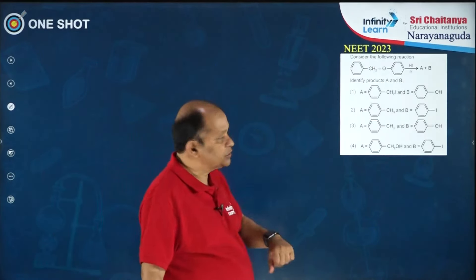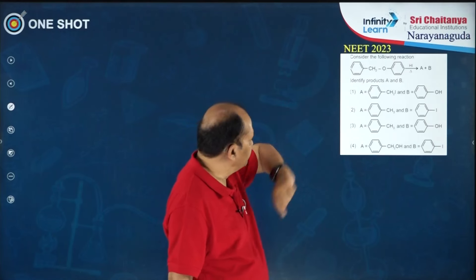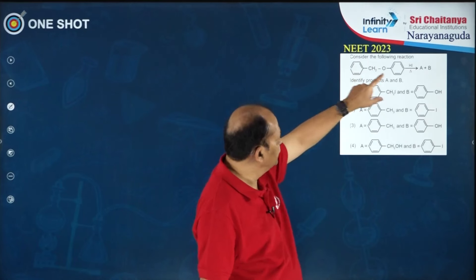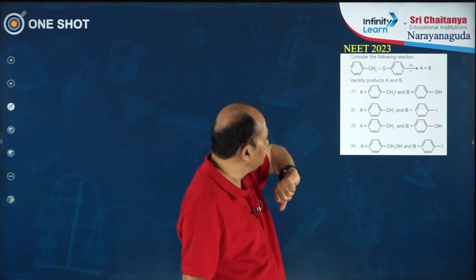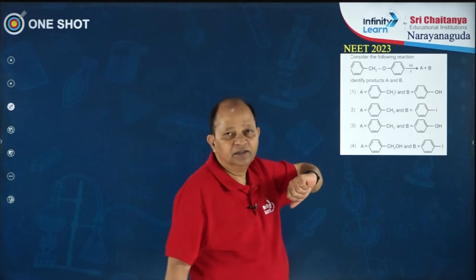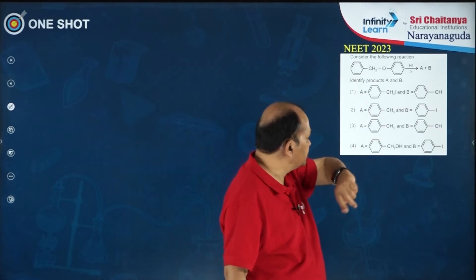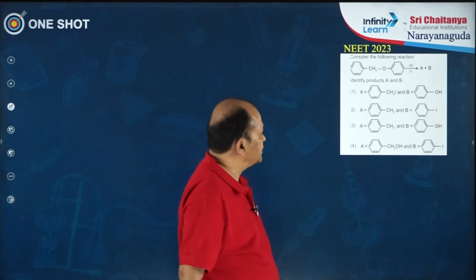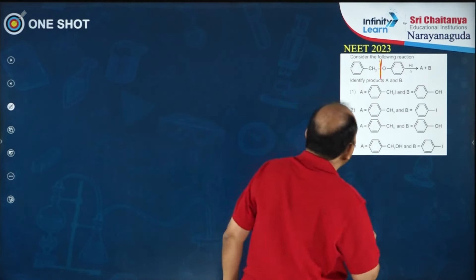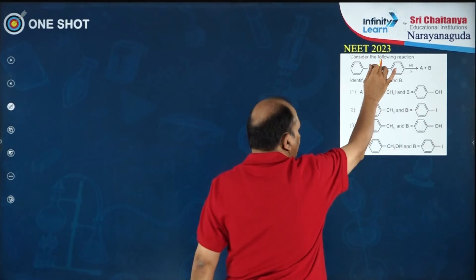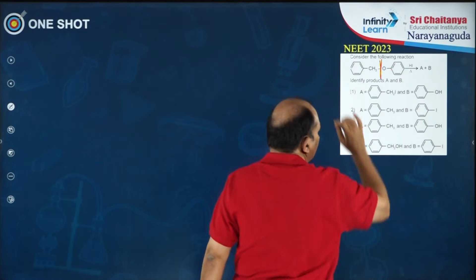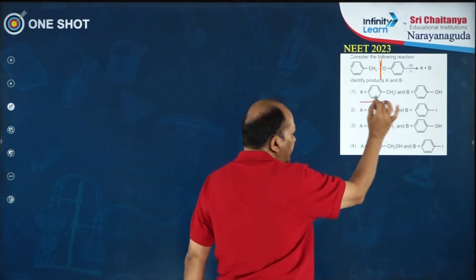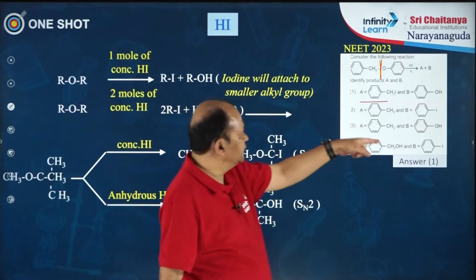There is a question based on this from NEET 2023. He gave benzyl phenyl ether subjected to reaction with hydrogen iodide, giving two products to identify. The important point is that cleavage takes place at the benzylic carbon — iodine will be attached to the benzylic carbon and phenol will be formed. So A is benzyl iodide, B is phenol, and the answer is option 1.